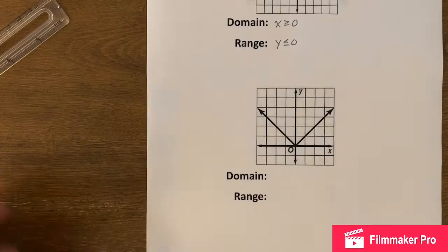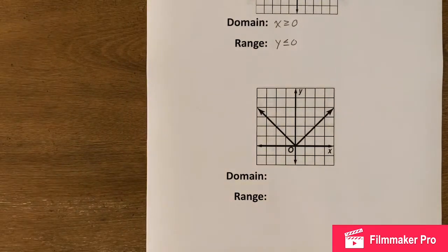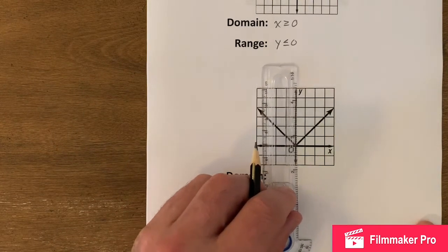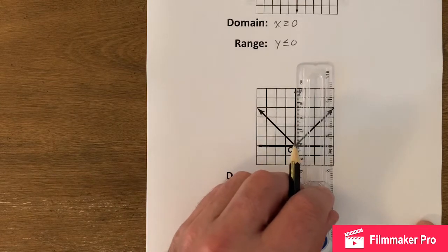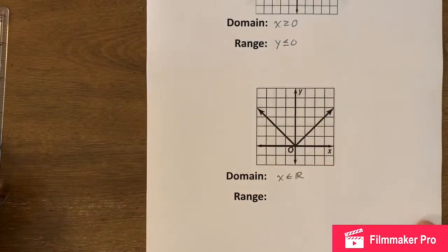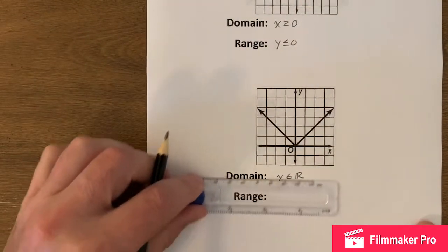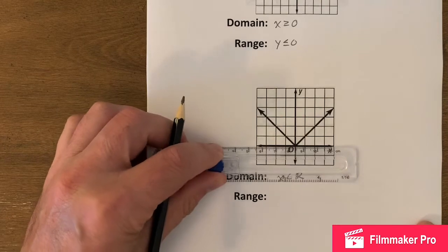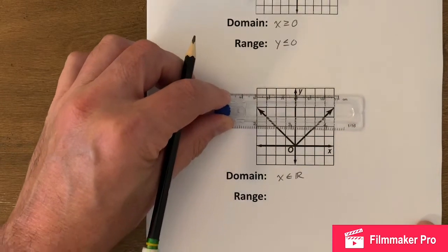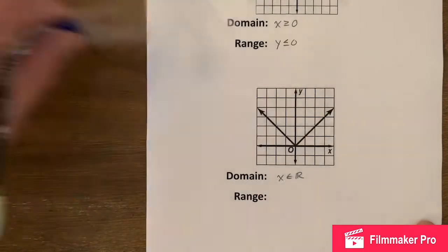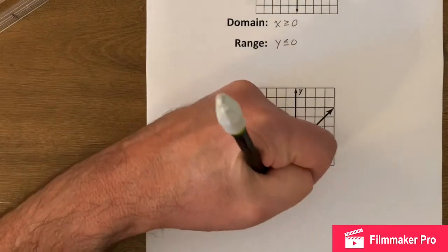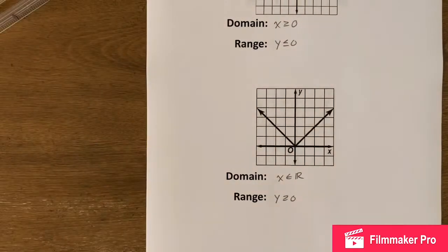Here we have an absolute value function. Domain: arrow all the way over — good, good, good — to arrow. So x is an element of the set of real numbers. For the range: nothing until zero — it starts at zero and goes up to infinity like this on both sides. So my range would be all y greater than or equal to zero.